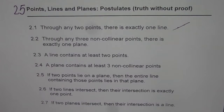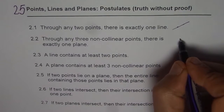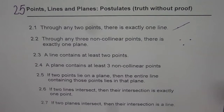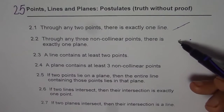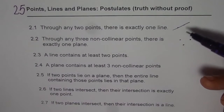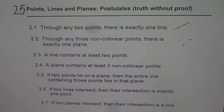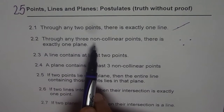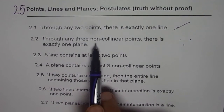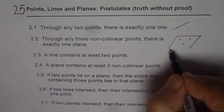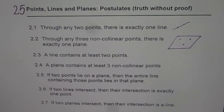Postulate 2.2: Through any three non-collinear points there is exactly one plane. Consider the plane of this paper — these three points can lie on only one plane. Any other plane through two of them cannot pass through the third. So postulate 2.2 defines a plane as passing through three non-collinear points — points not in a straight line.